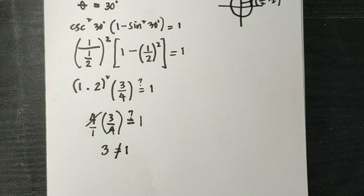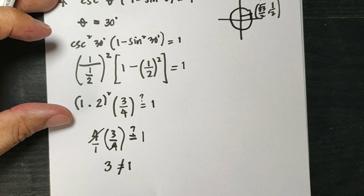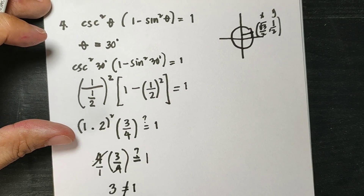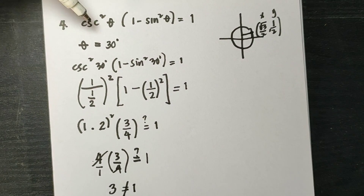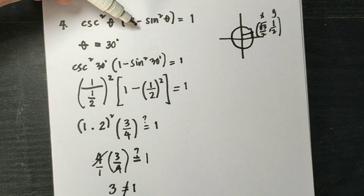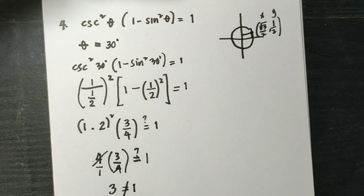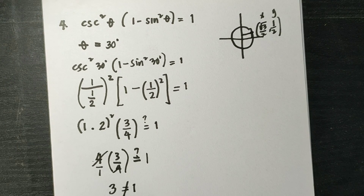So the equation cosecant squared theta times 1 minus sine squared theta equals 1 is not an identity, but a conditional equation.